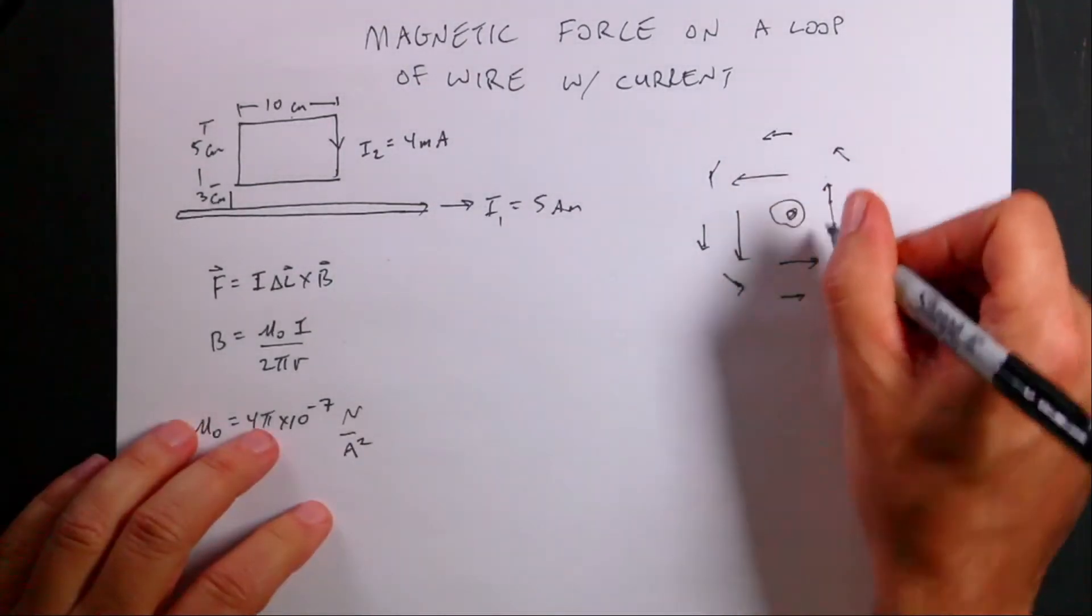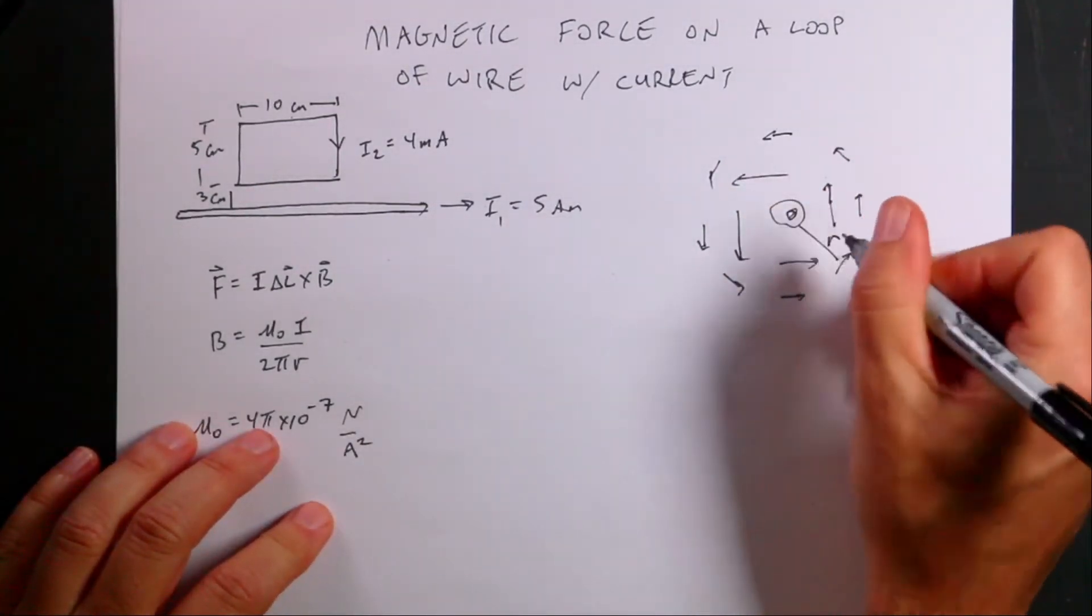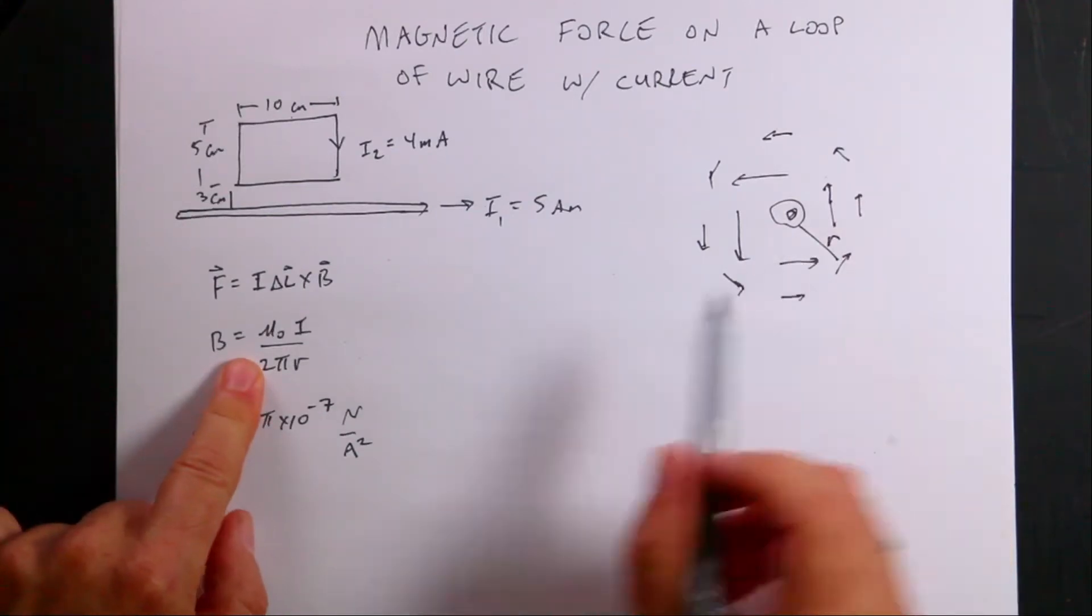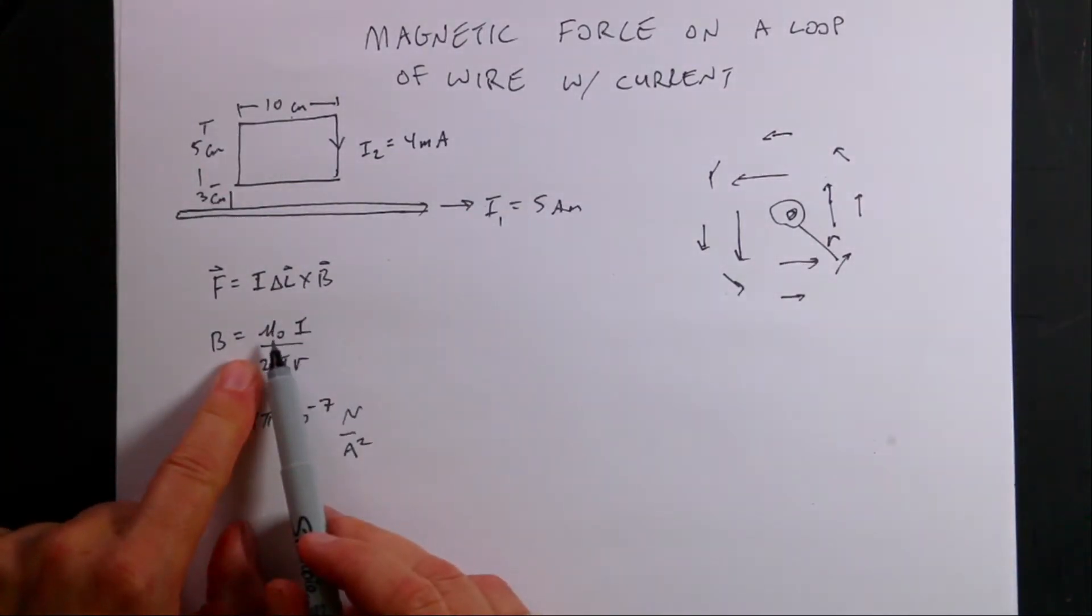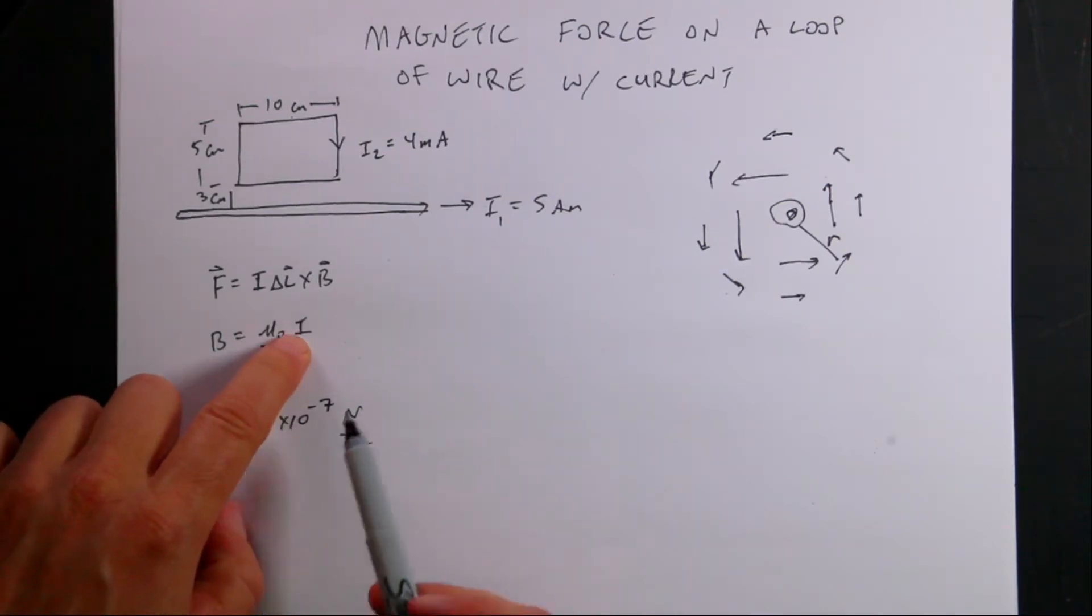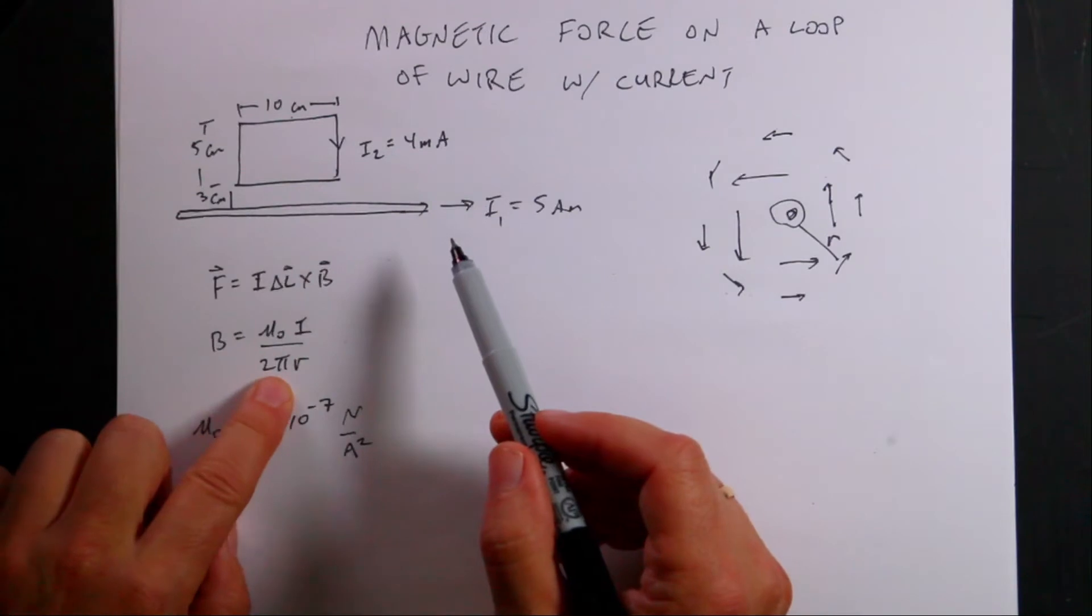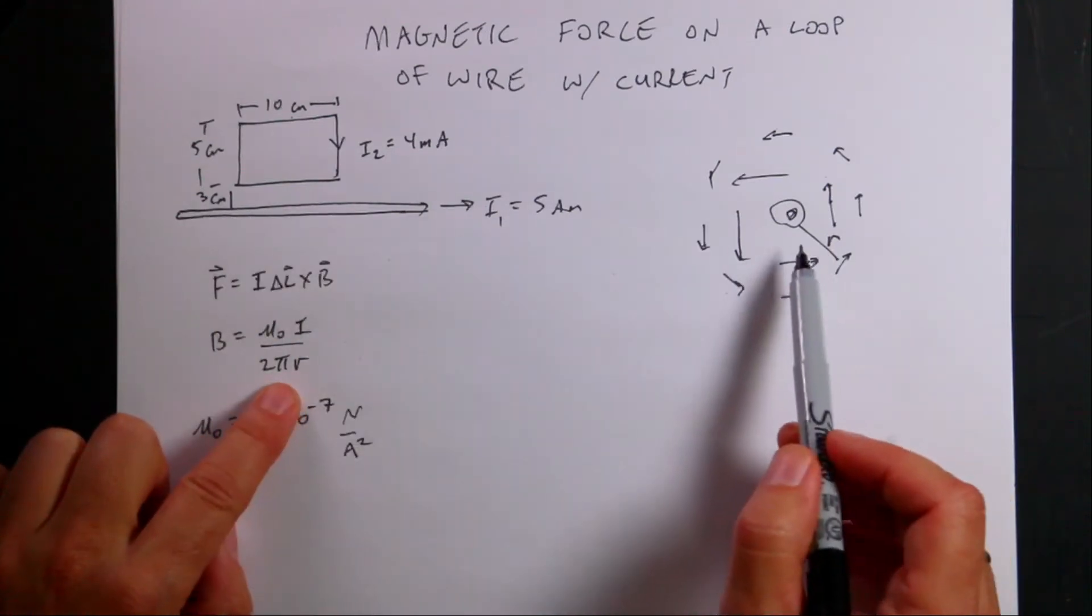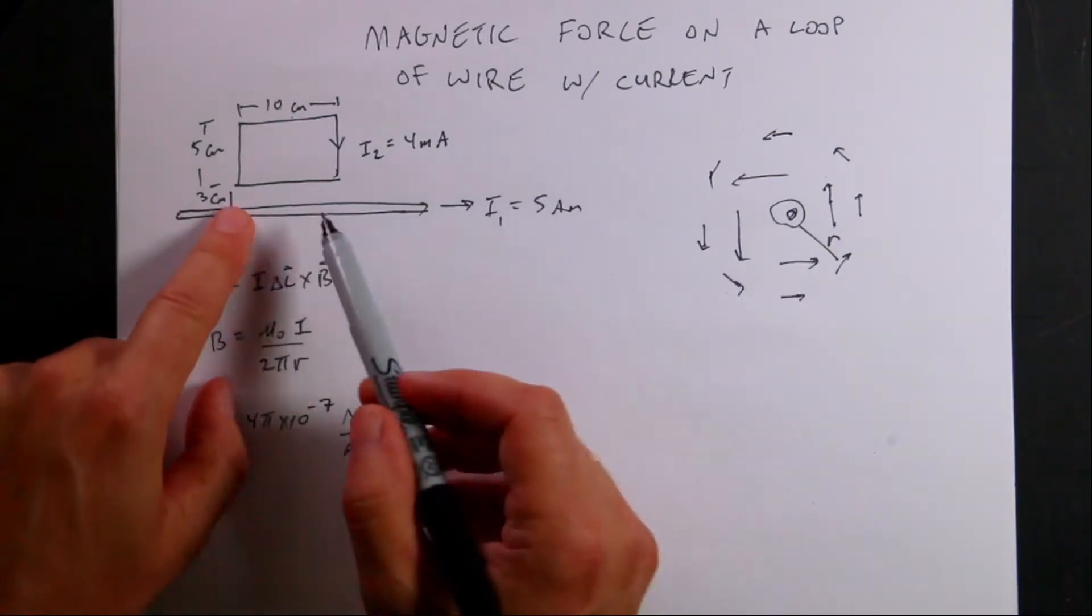That's the pattern of the field around that. I can actually calculate the magnitude of that. If I know the distance away as a value of r, then I can use this. The magnitude of the magnetic field is mu naught over 2 pi multiplied by the current in this wire divided by 2 pi r. So this tells me the strength of the magnetic field due to this wire.